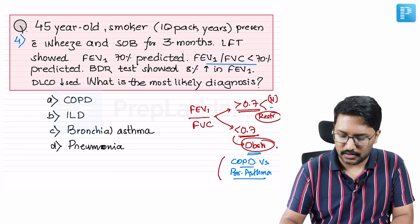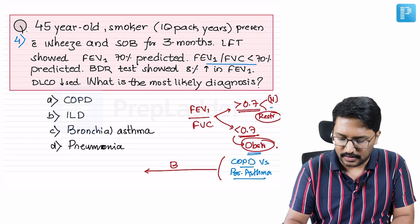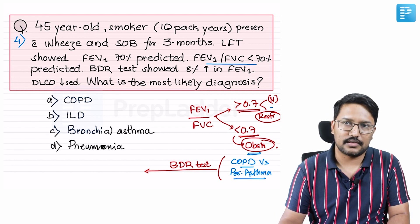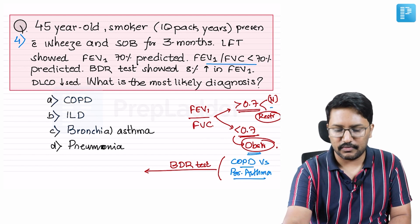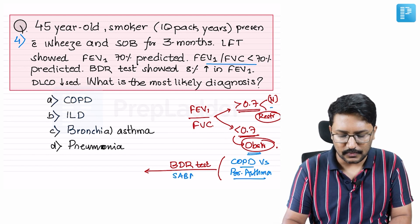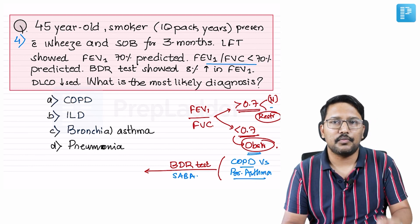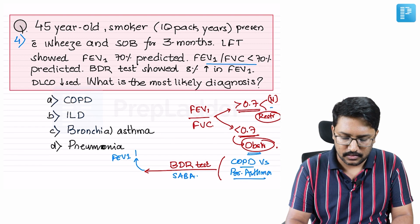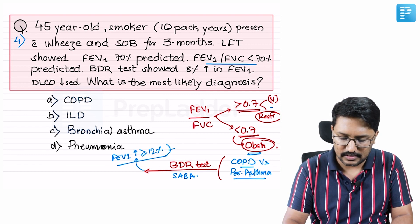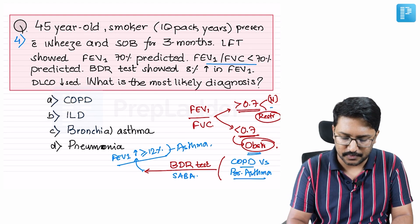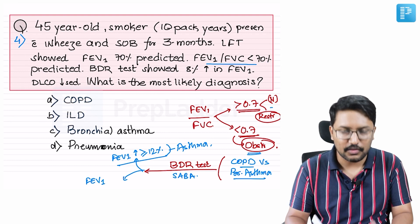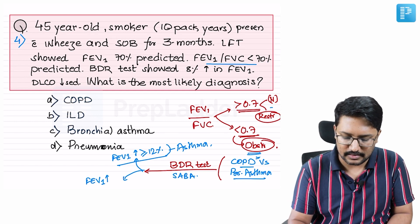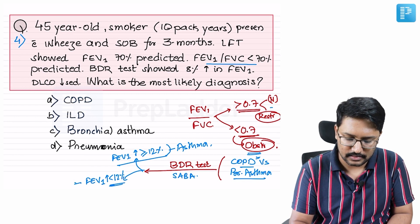We ask the patient to inhale a short-acting beta agonist — this is the bronchodilator reversibility (BDR) test. Alternatively, a short course of steroids can be given. After administering the short-acting beta agonist, we repeat FEV1. If FEV1 increases by more than or equal to 12%, the case is classified as asthma. If FEV1 increases by less than 12%, it is classified as COPD. FEV1 may increase even in COPD patients, but the threshold is 12%.